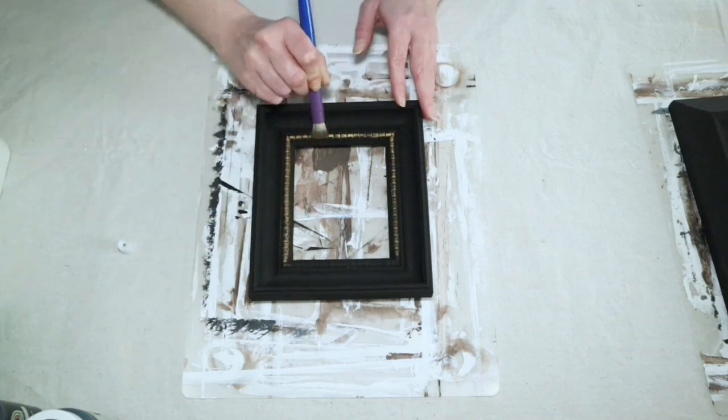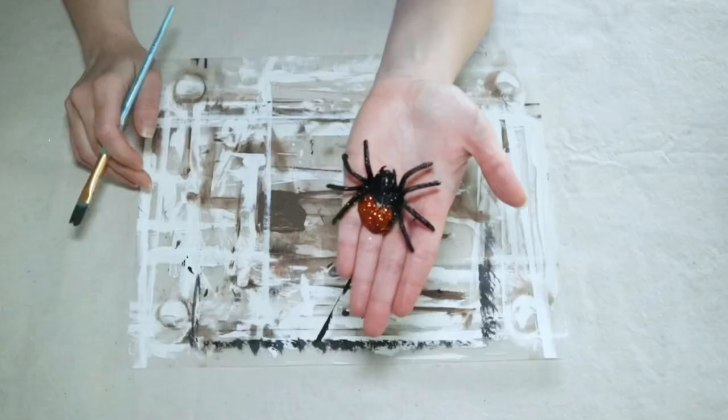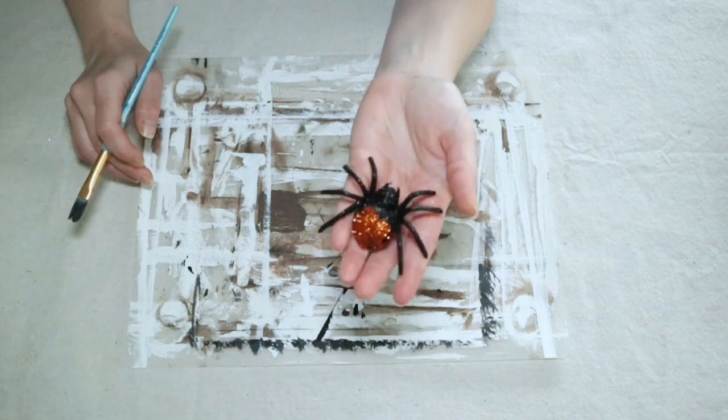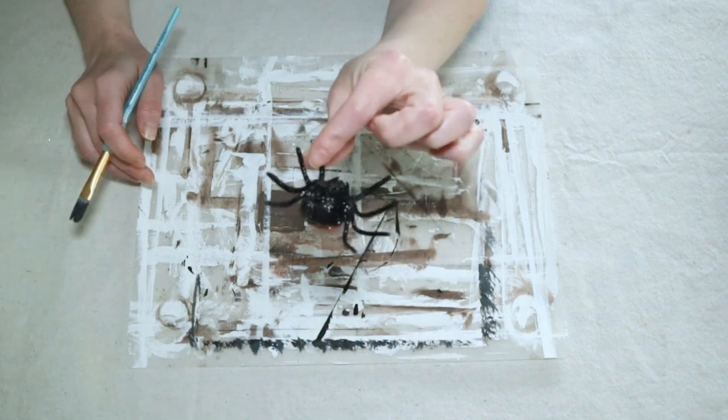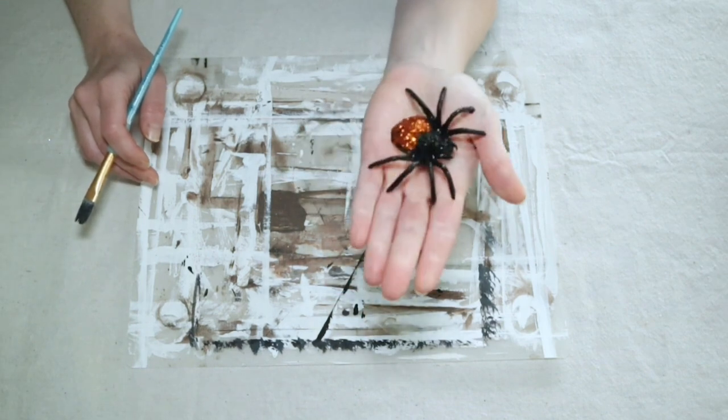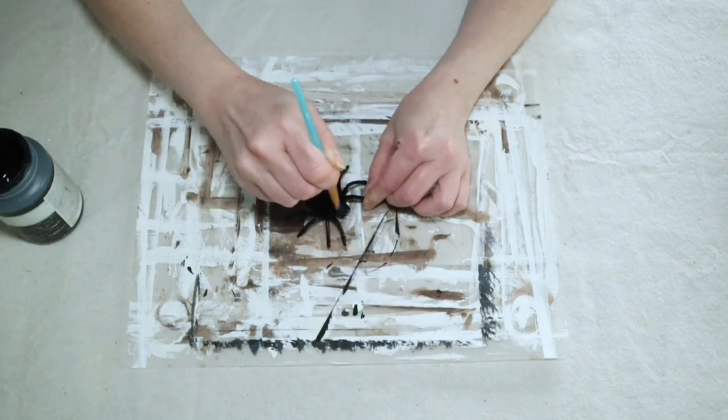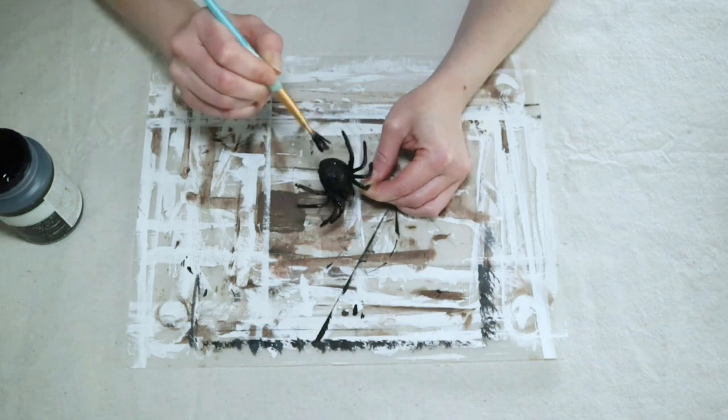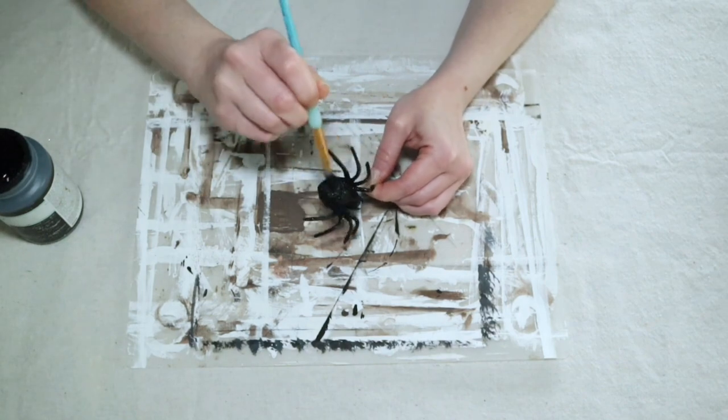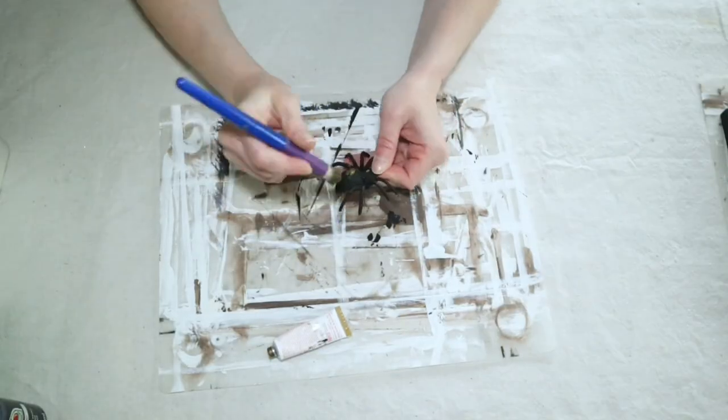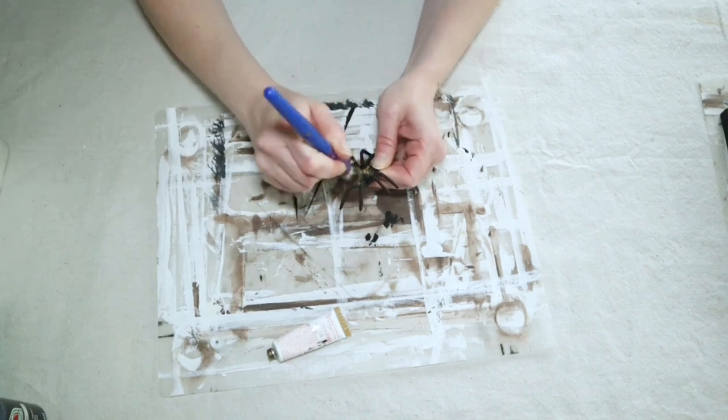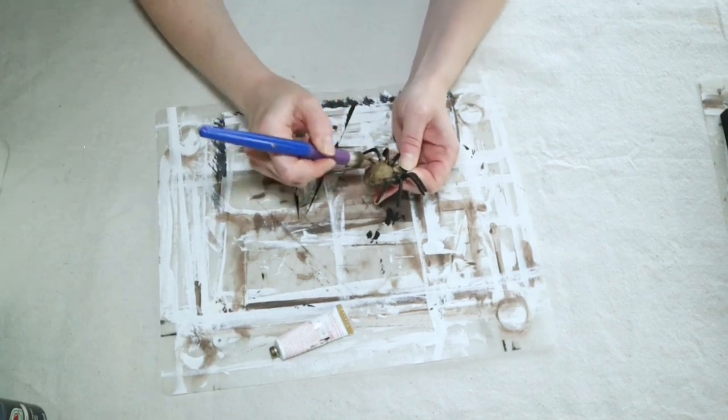Then I just grabbed this little glittery spider that I got from the Dollar Tree last year. I'm not worried about taking the glitter off. I just went over it with two coats of my black chalk paint and it covered up that glitter just fine. Then I decided to go over him with some of that rub and buff just to give him a bronzy gold look as well.